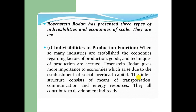Rosenstein-Rodan discussed three types of indivisibilities and economies of scale. The first is indivisibilities in the production function. Infrastructure consists of means of transportation, communication and energy resources — they all contribute to development indirectly.